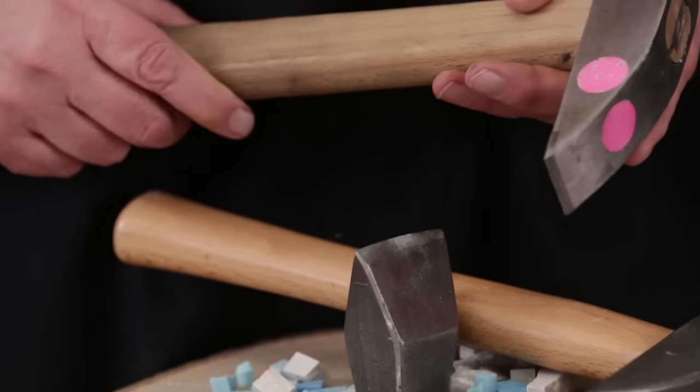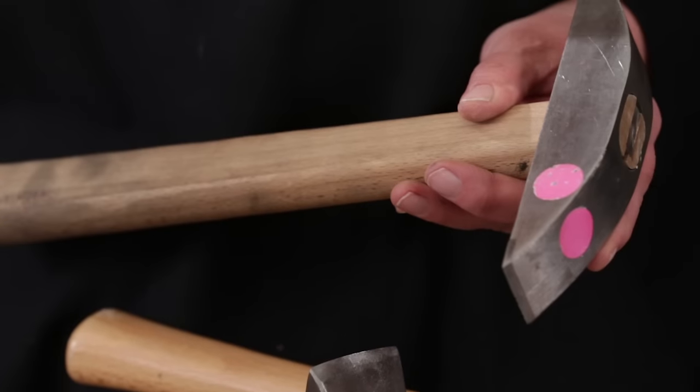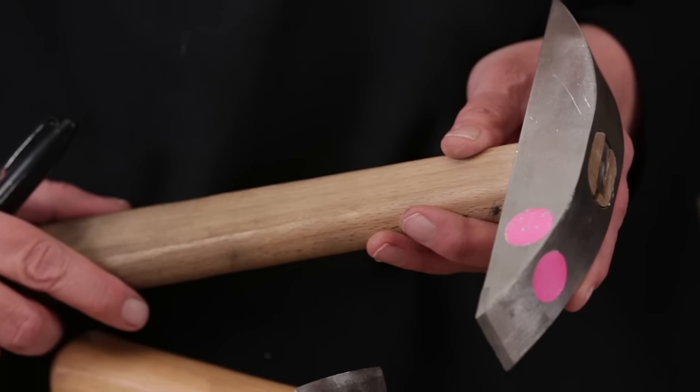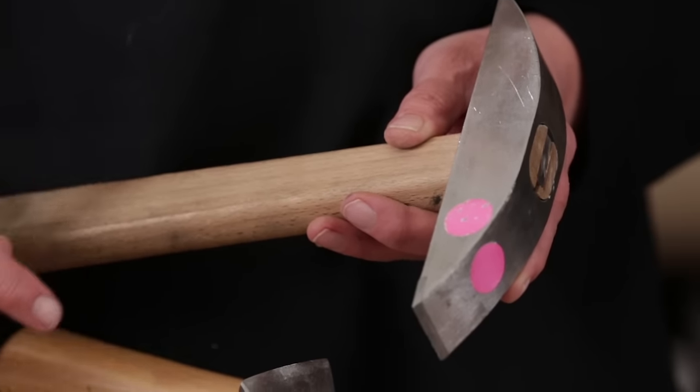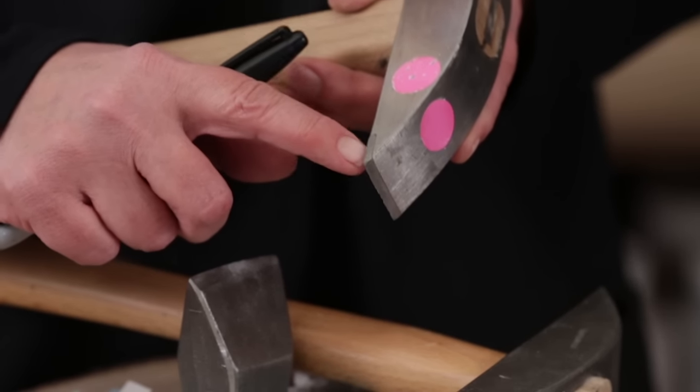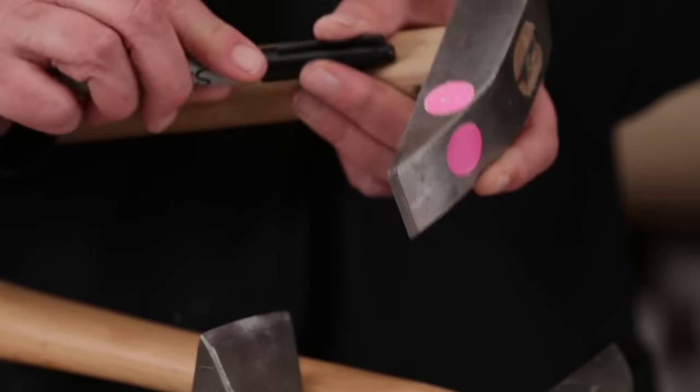So, this hammer is a combination hammer, which means it can be used for both glass and stone. And if you see right down here, you'll see this little rectangle that's carbide. This side is for glass.